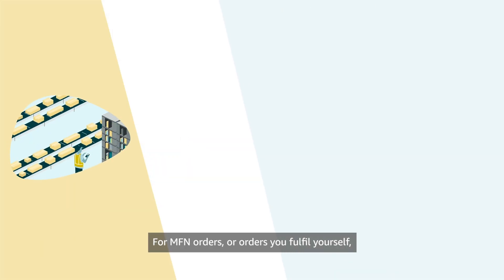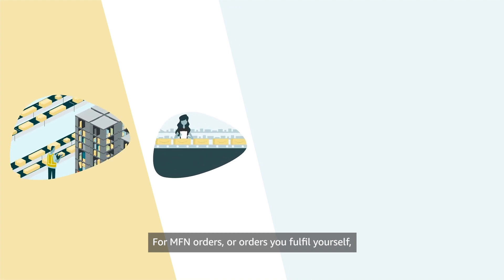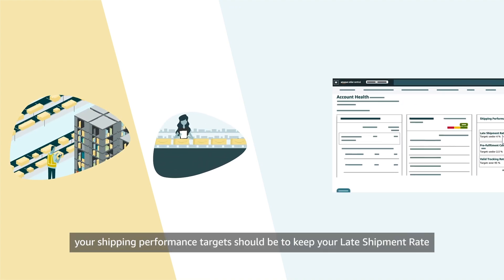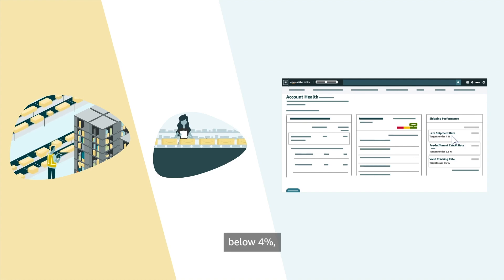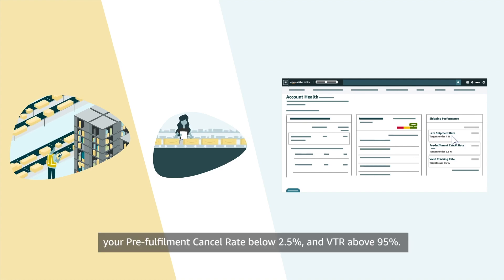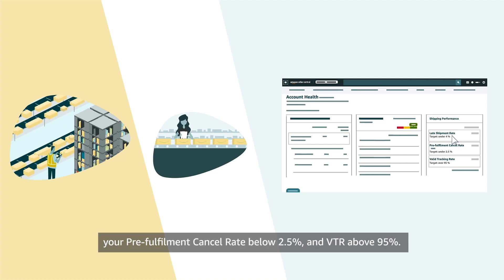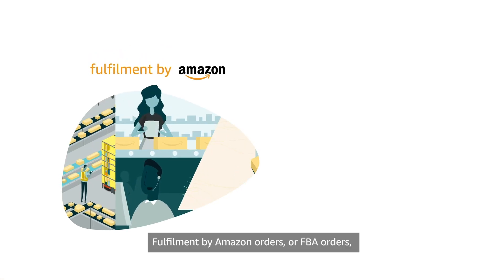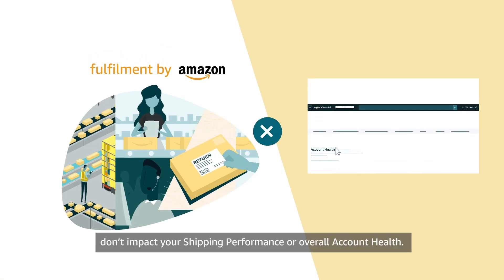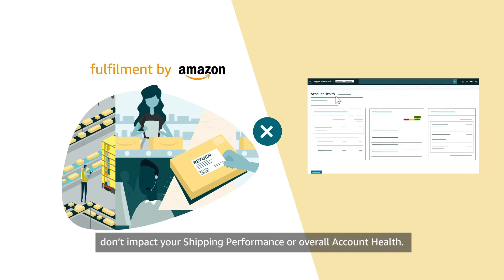For MFN orders, or orders you fulfill yourself, your shipping performance targets should be to keep your late shipment rate below 4%, your pre-fulfillment cancel rate below 2.5%, and VTR above 95%. Fulfillment by Amazon orders, or FBA orders, don't impact your shipping performance or overall account health.